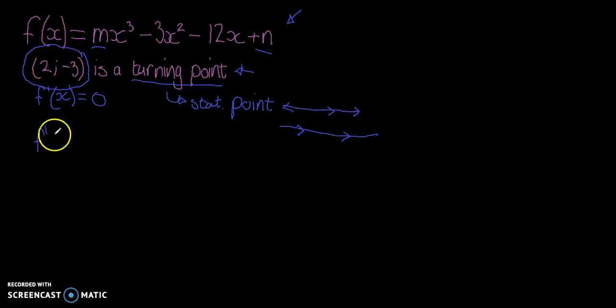So I'm going to do the correct notation and find the derivative. 3 times m is going to be 3m, and it's going to be x squared. Then 2 times 3 is going to be minus 6x. Then this is to the power of 1, so 1 times 12 is going to be negative 12, and then it's x to the power of 0, which means it's 1, which means we don't have to write it down.